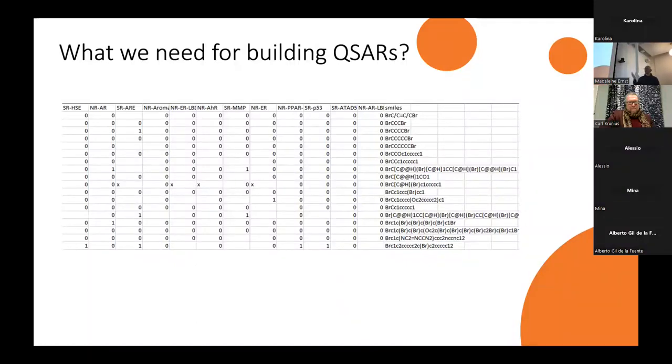So this is what we look like. I have 12 columns, zeros and ones, meaning the compound is active or not active in a certain assay or against a certain target. And then we extract the smile structures of each compound. So per column, there will be a machine learning model in the end.